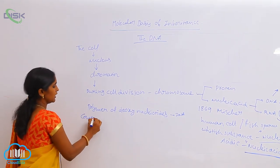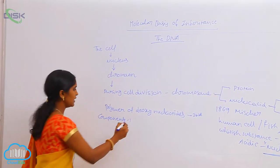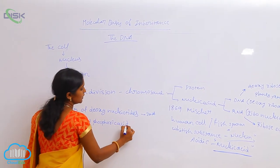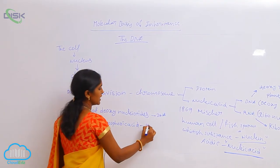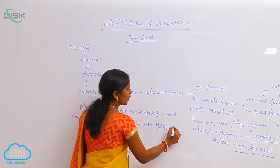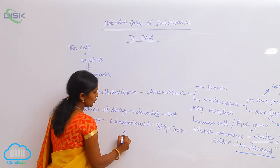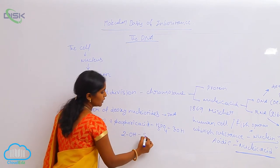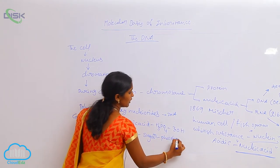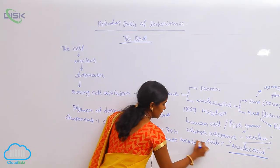What are the key components present in DNA? Basically three key components are present. One is phosphoric acid, which is in the form of H3PO4. It has three OH active groups. Out of three active OH groups, two OH groups are combined with sugar to maintain the sugar-phosphate backbone.